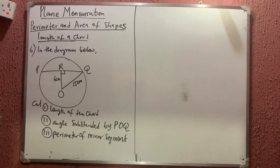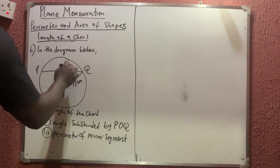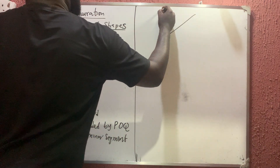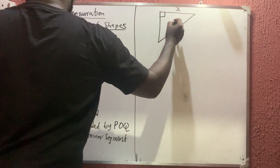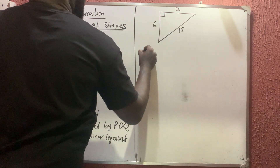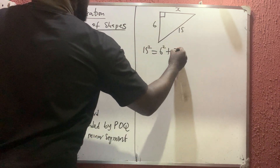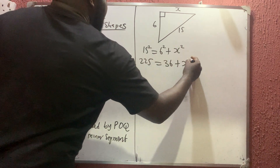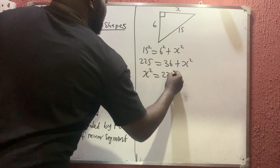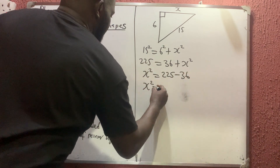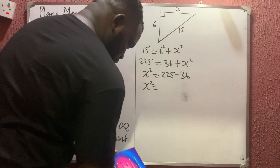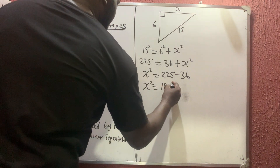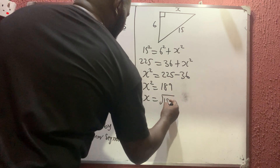Let's start from the first one — the length of the chord. To calculate this we use the Pythagorean theorem. The triangle has x, 90 degrees, 15, and 6. So: 15 squared equals 6 squared plus x squared, meaning 225 = 36 + x squared, so x squared = 225 - 36 = 189.